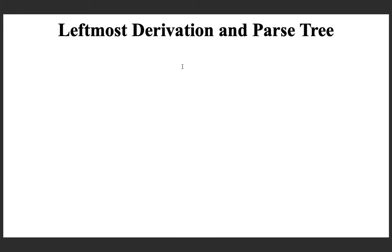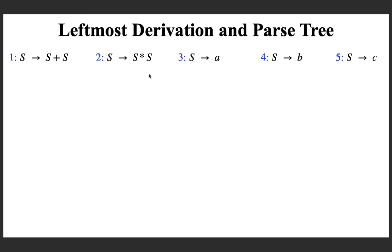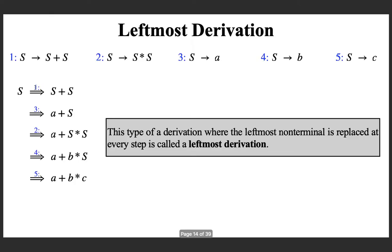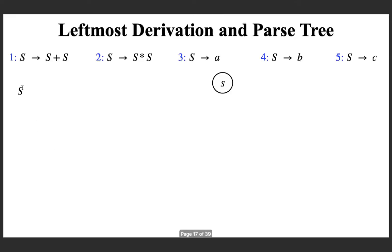Now, I think what a leftmost derivation is is clear to you. It is a simple concept. And now I am going to introduce what is called a parse tree. With the same grammar, you can look at the same derivation again. You start with the start symbol of the grammar and you can represent a derivation using a tree - we are going to see what that tree is. You start with the start symbol, and it can be represented using the root node of the tree, which is known as a derivation tree.